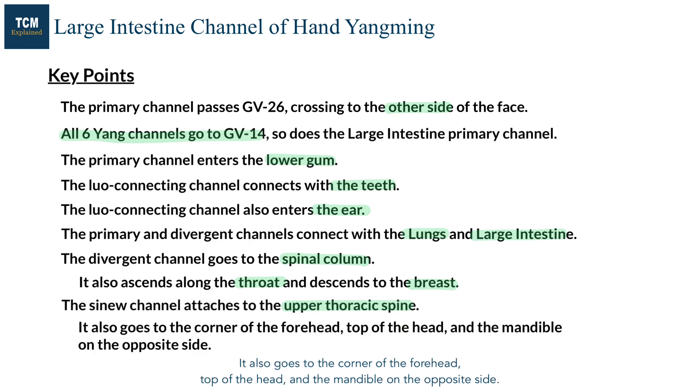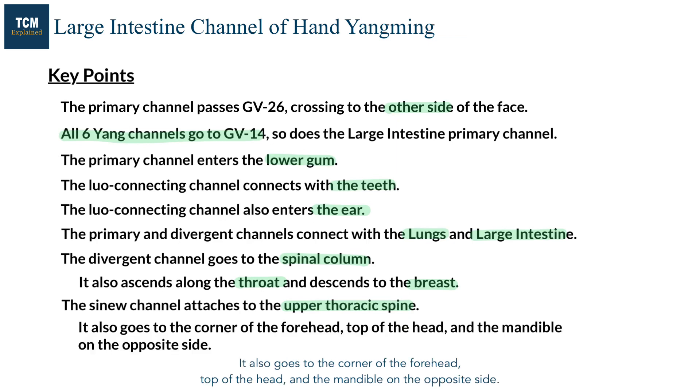The sinew channel attaches to the upper thoracic spine. It also goes to the corner of the forehead, the top of the head, and the mandible on the opposite side.